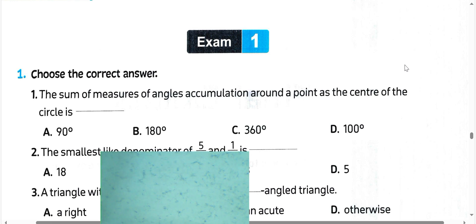First question, choose the correct answer. The sum of the measure of angles accumulation around the point at the center of the circle equals 360. We have the circle, then the cumulative angles drawn at the center, the sum of them equals 360 degrees.